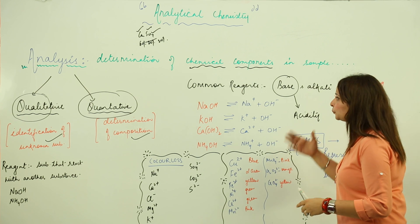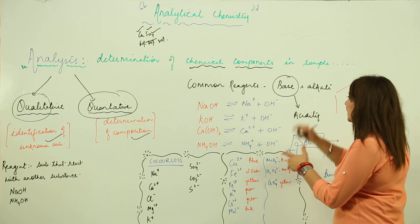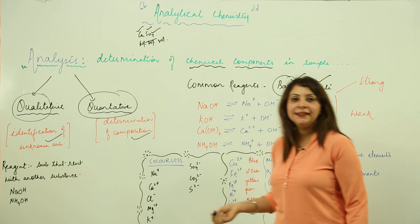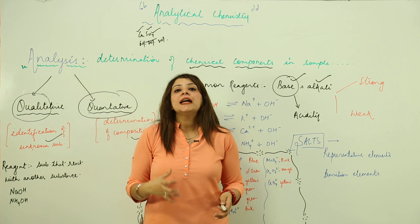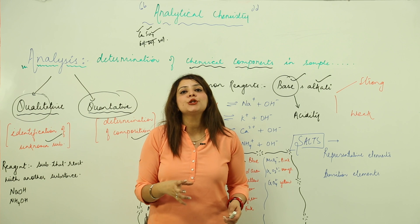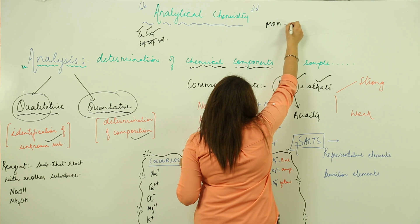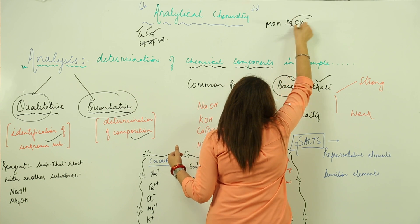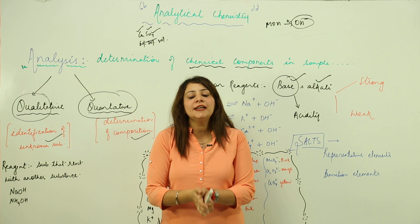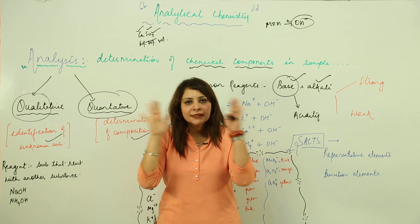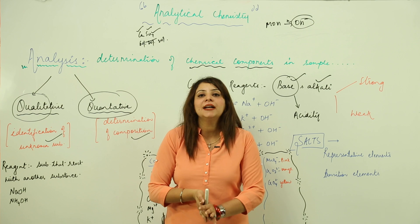The common reagents used belong to the category of bases and alkalis. A base is a substance which has the tendency to release hydroxide ions when dissolved in water. If I dissolve MOH in water and get hydroxide ions, it is a base. Any substance which, when dissolved in water, releases hydroxide ions is regarded as a base — it is simply a substance which donates the hydroxide ion.